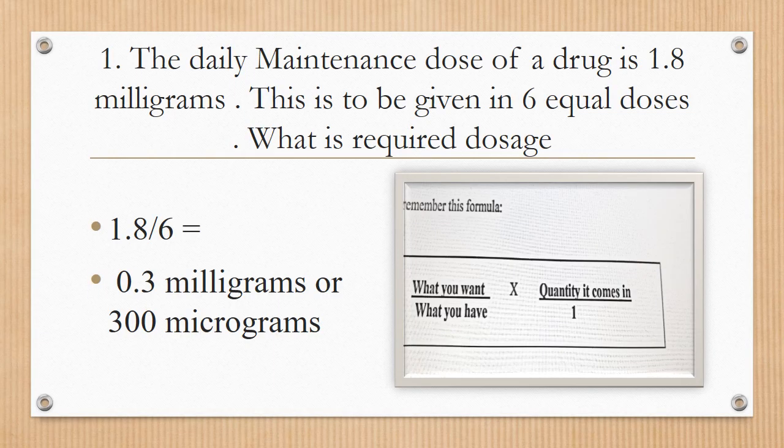First question: the daily maintenance dose of a drug is 1.8 milligrams, to be given in six equal doses. What is the required dosage? Using the formula — what you want divided by what you have — 1.8 divided by 6 equals 0.3 milligrams. In round figures, that is 300 micrograms. To convert milligrams to micrograms, multiply by 1000, giving 300 micrograms.